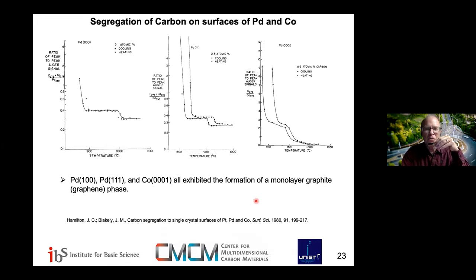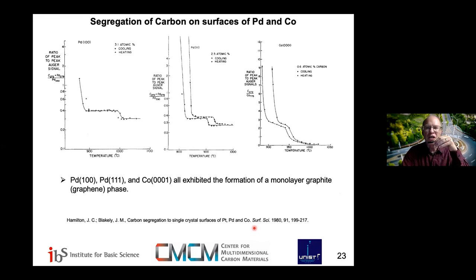Graphene can actually form as a monolayer per what they saw with low energy electron diffraction and also in situ Auger. I'll jump forward through all of this fascinating work by Jack Blakely's group, which also extended to platinum, palladium, and cobalt. They saw this sort of segregation behavior on each type of crystal — some of which are epitaxial matches to graphene and some of which are not. The lattice matching is an interesting issue.